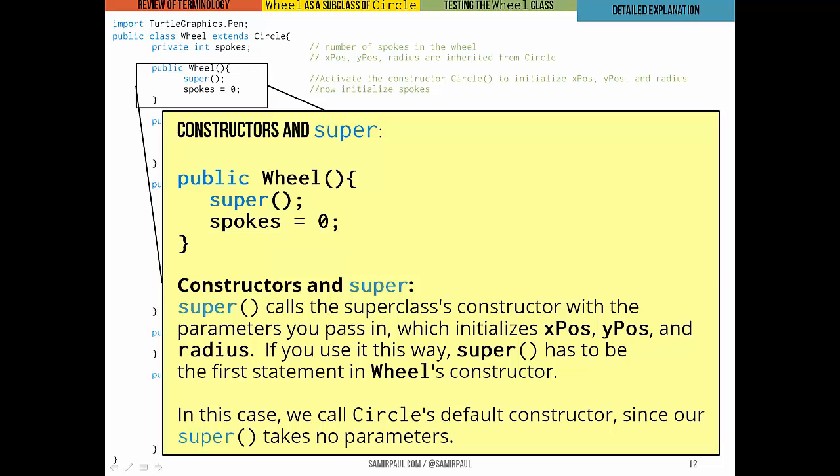Now the constructors in the Wheel class, they explicitly initialize the variable spokes. That's the new instance variable we added to the Wheel class. But we use the constructors in the super class, Circle, to initialize all the other remaining variables. That's x position, y position, and radius. The way we do this is by using the keyword super. Super activates the constructor that we want in Circle. In other words, it activates the super class's constructor. And whatever parameters we pass it, those determine which constructor in Circle in the super class will be called. Now when you use super this way, it has to be the very first statement in the Wheel constructor. So the fact that you see right here, the very first thing that happens in the Wheel constructor is the call to super. In this case we're calling the default constructor of the Circle class. That's not an accident. If you're using super to call a constructor, it has to be the first thing that happens. Then you can handle everything else, for instance, initializing spokes.